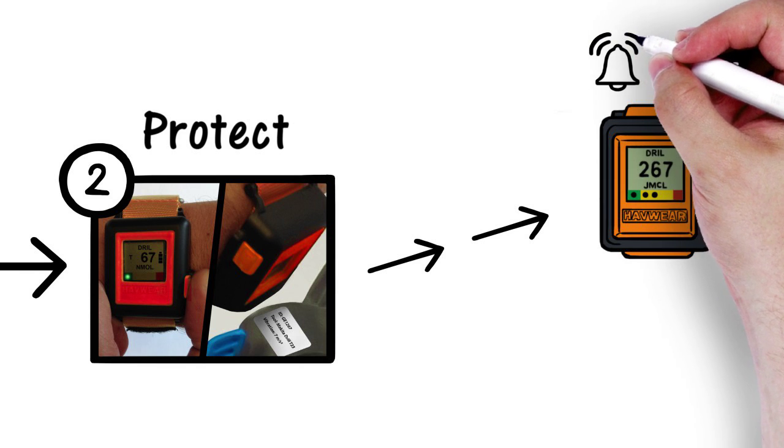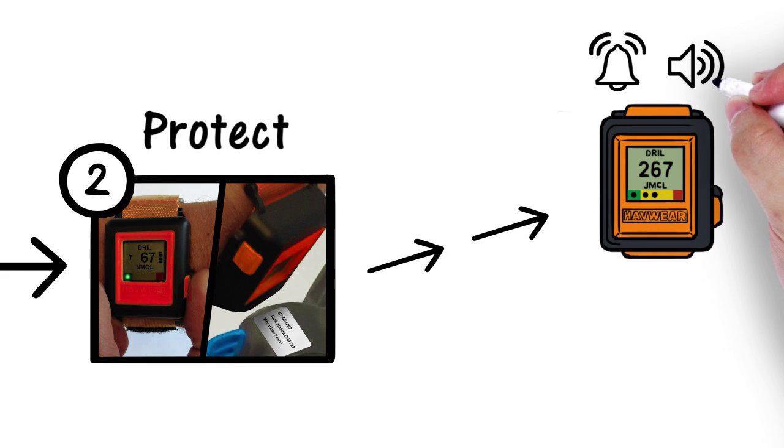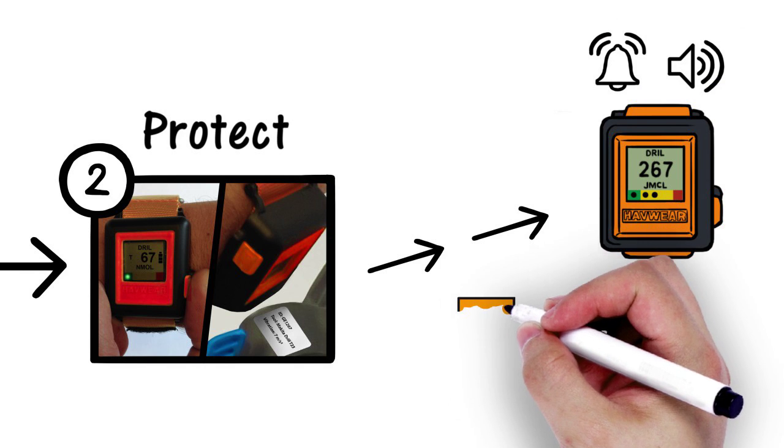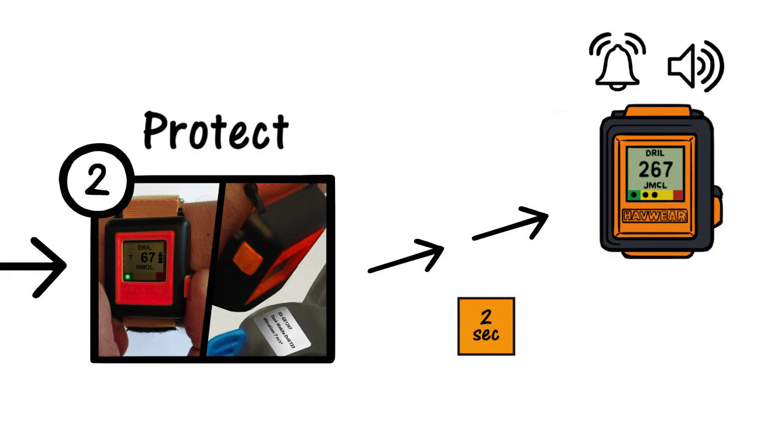Sound and vibration alerts also inform the wearer of incremental increases in exposure and action thresholds exceeded. First alert is for two seconds when the wearer's personal EAV threshold is breached.